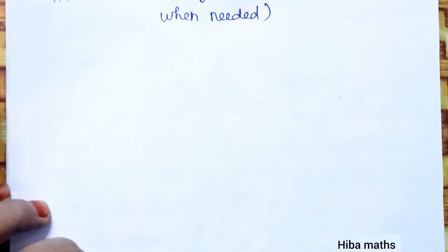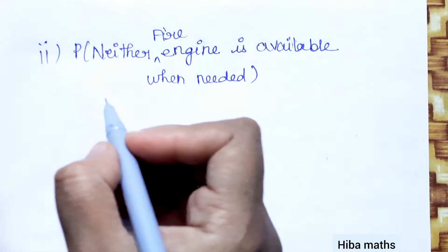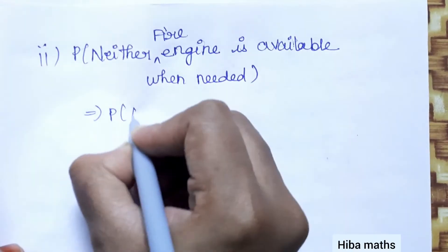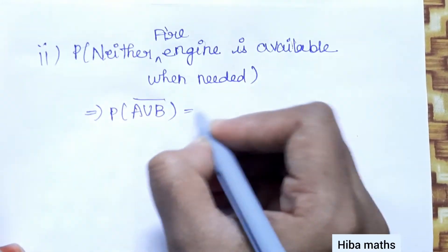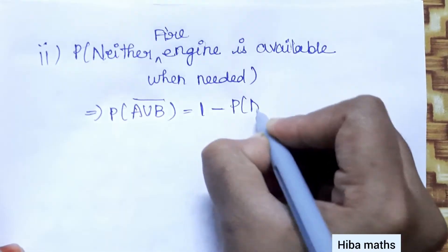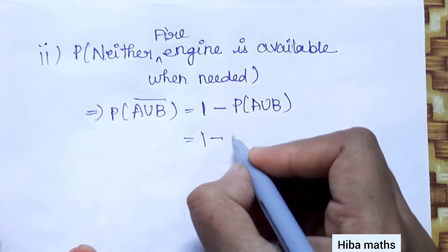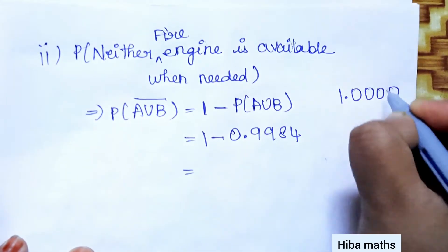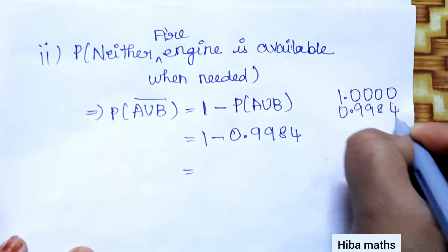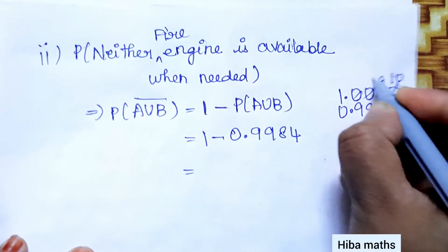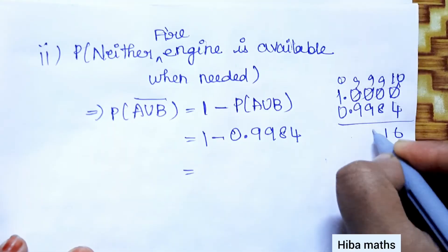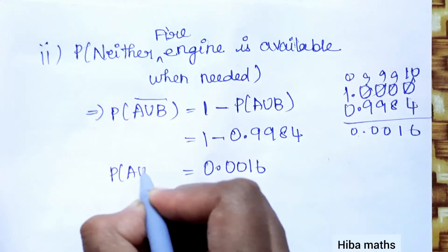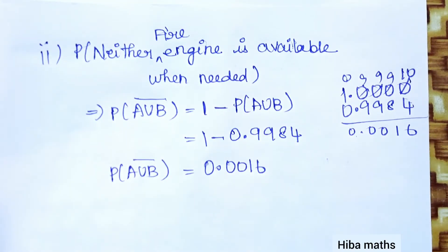Second part: probability that neither fire engine is available when needed. P(A∪B) complement = 1 - P(A∪B) = 1 - 0.9984 = 0.0016. So P(A∪B) bar = 0.0016. Thank you so much for watching.